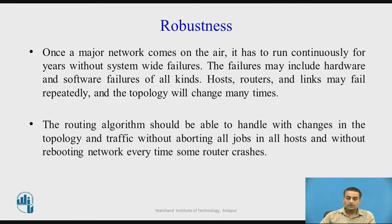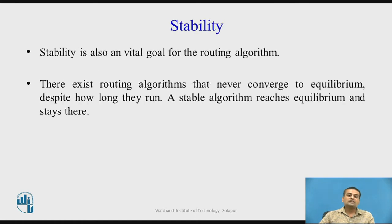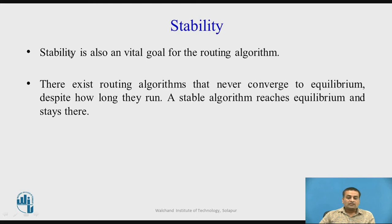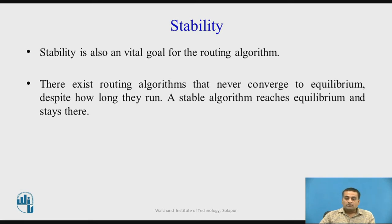Stability is also a vital property. Some routing algorithms never converge to equilibrium no matter how long they run. A stable algorithm reaches equilibrium and stays there, but many routing algorithms fail to reach equilibrium.